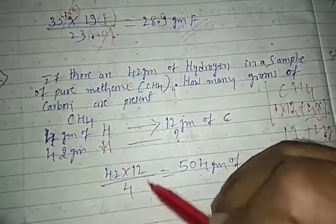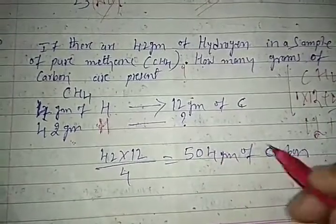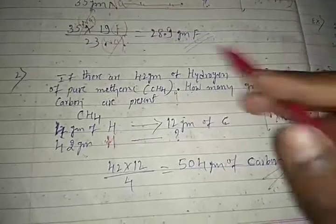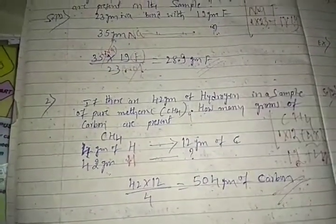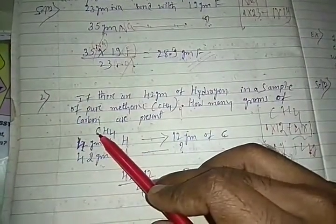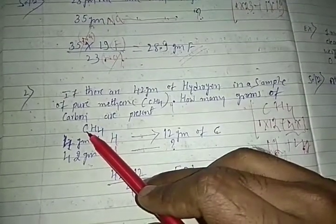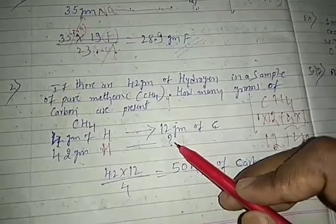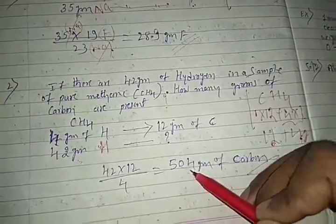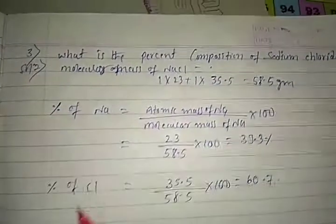We calculate: 42 × 12 / 4, and we get 126 grams of carbon. This completes the second example. Both examples belong to the Law of Definite Proportion — the masses are fixed. In methane, the carbon-to-hydrogen ratio is constant. For 42 grams of hydrogen, 126 grams of carbon are required.